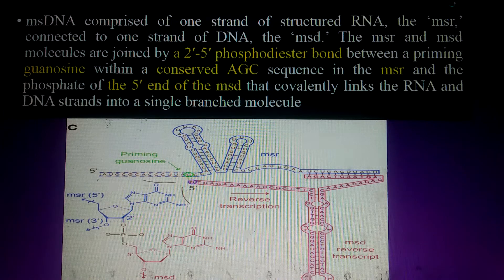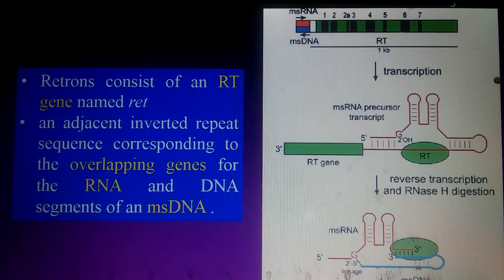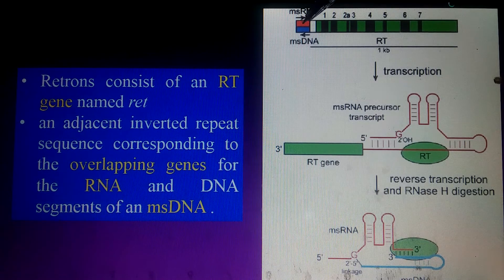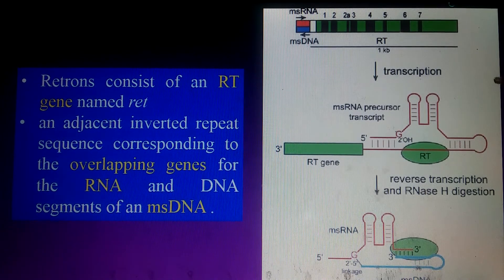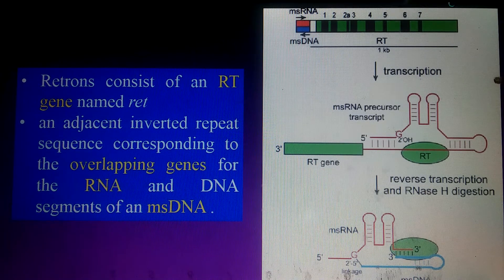Looking at the structure and organization of the retron: it functions like an operon — a cluster of genes consisting of ms-DNA and ms-RNA genes, with adjacent inverted repeat sequences corresponding to overlapping genes for the RNA and DNA segments of msdna. There is also an RT gene responsible for forming the reverse transcriptase enzyme, which is ultimately responsible for the synthesis of msdna.